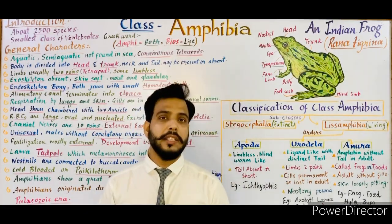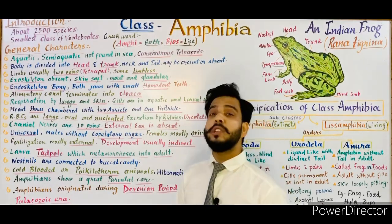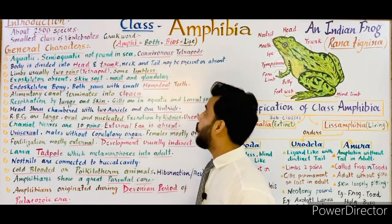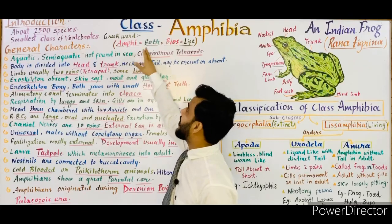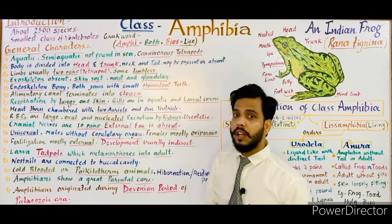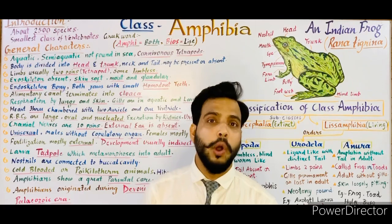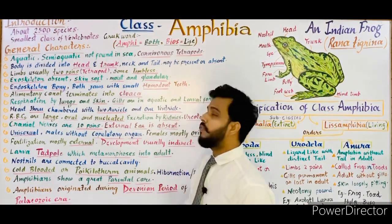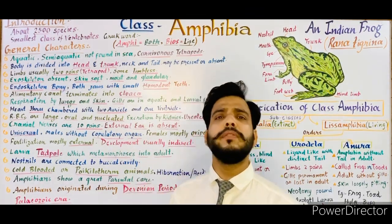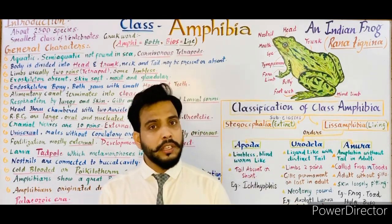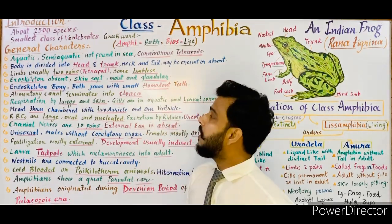In Tetrapoda, the first class is Amphibia. The word Amphibia originates from two Greek words: 'amphi' meaning 'both' and 'bios' meaning 'life.' It refers to animals capable of spending their life on land as well as water. These animals can live on land but require water for reproduction and fertilization, hence they occupy both habitats.